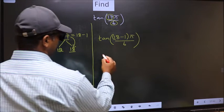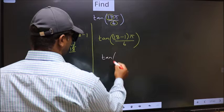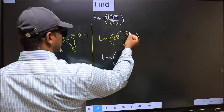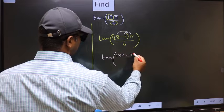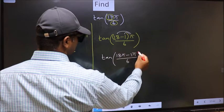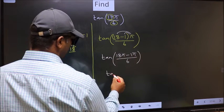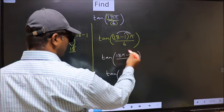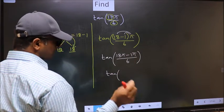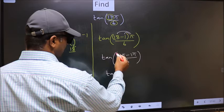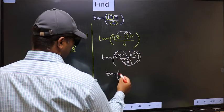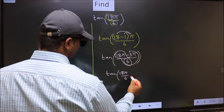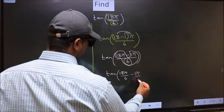Next, tan. Now you should open up the brackets. You get 18π minus 1π by 6. Now tan, over here you should split the denominator in this way, that is 18π by 6 minus 1π by 6.